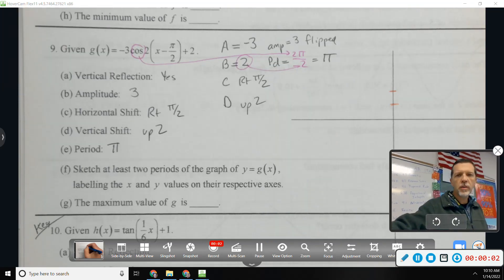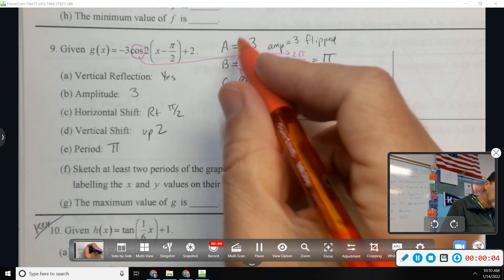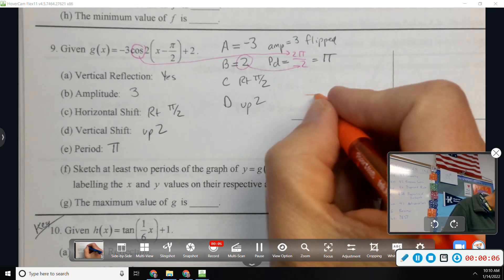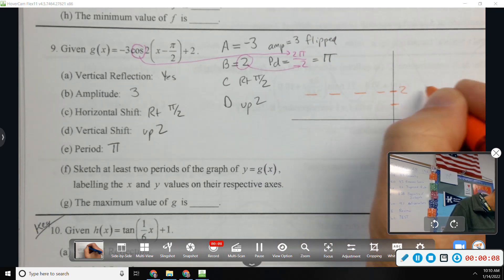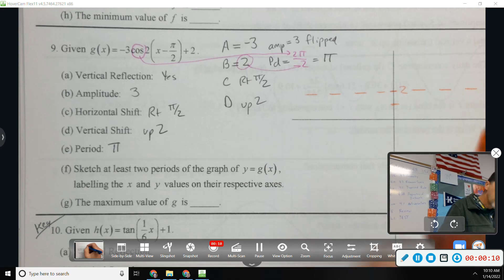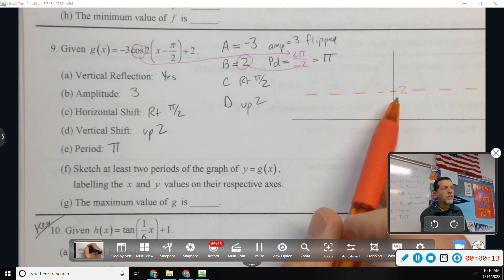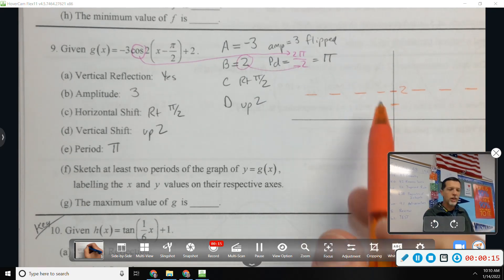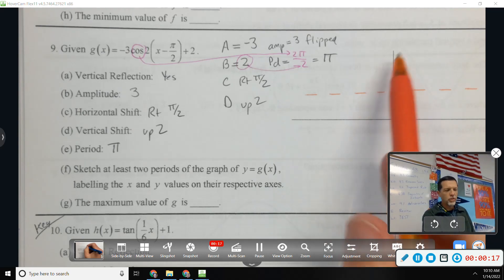So there's all our information for number 9. To graph it, we use it in reverse order. So D is up 2. Be careful where you put 2, right, because that's only the midline. That's like the average value. You've got to go up and down from that. So don't put 2 at the very top.